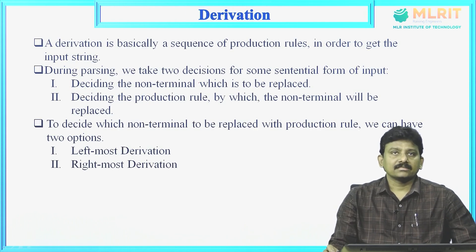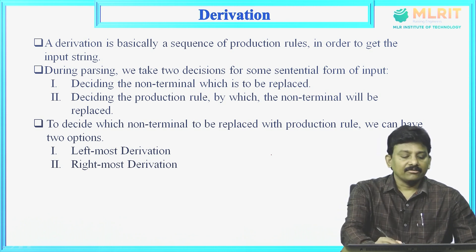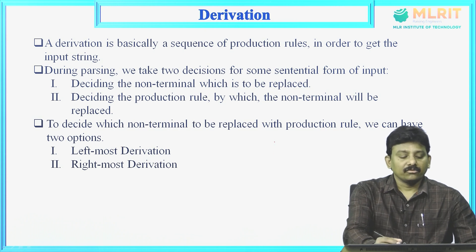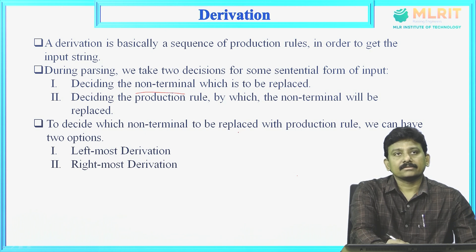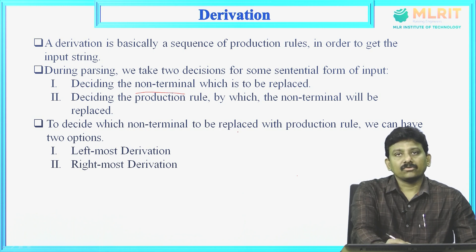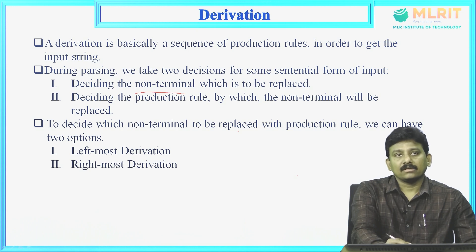A derivation is basically a sequence of production rules in order to get an input string. To derive an input string in the derivation, we need to consider two things. First is which non-terminal is to be replaced. Second is deciding the production rule by which the non-terminal is to be replaced. Here we have two choices: we can replace a non-terminal in the sentential form — either the leftmost non-terminal or the rightmost non-terminal.